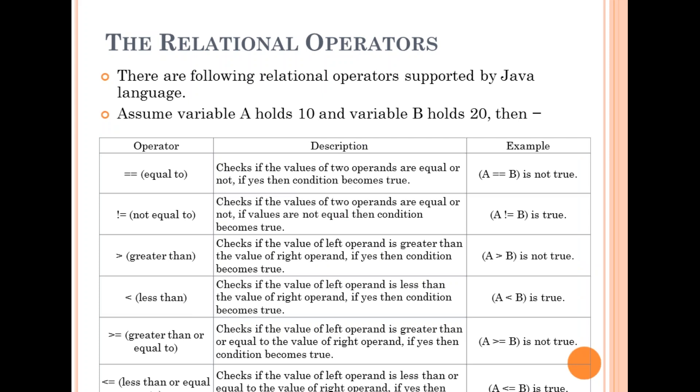The relational operators. There are following relational operators supported by Java language. Assume variable A holds 10 and variable B holds 20. Then the relational operator double equal to checks if the values of two operands are equal or not. If yes then condition becomes true.